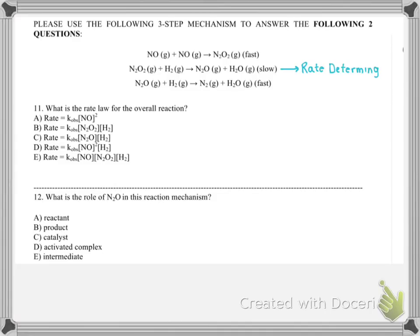They tell us the second step is slow, which means that's the rate determining step. The other reactions are only going to happen as fast as that reaction goes. So we can start by writing our rate law with this step that determines what the rate is. We'll have rate equals K times N2O2 times H2.